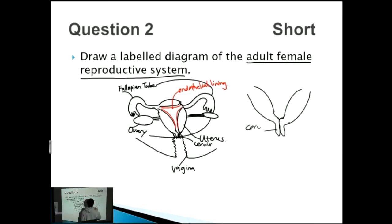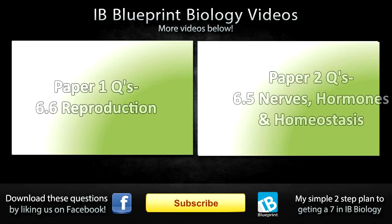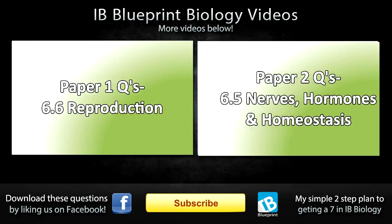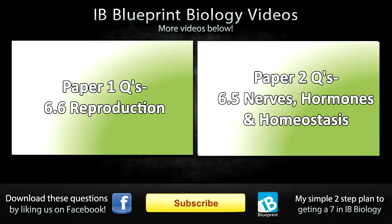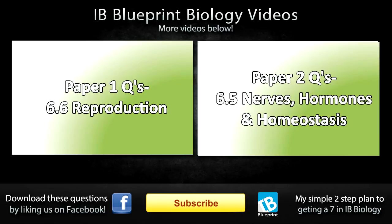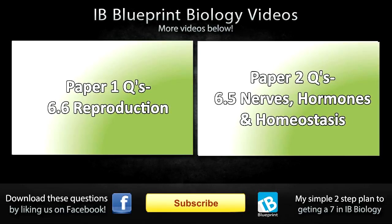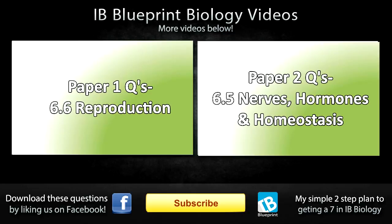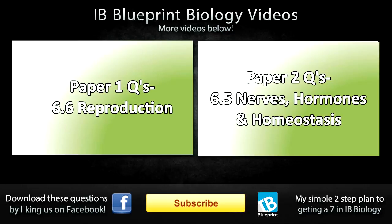If we count up how many points we've got, one, two, three, four, five, six, so I've got a maximum of six points, but this is a short question worth four marks. Lovely question if you can get this in the exam. Draw a simple diagram like that and you'll do well. There are plenty more YouTube videos to check out, just click the links below. If you'd like to download the questions and answers, make sure to like us on Facebook. Finally, if you'd like to find out how I got a seven in high level IB Biology, check out our website in the bottom right hand corner. Thanks.